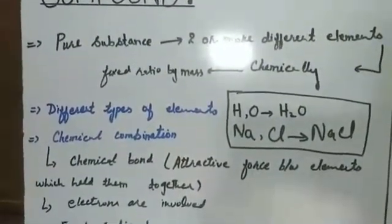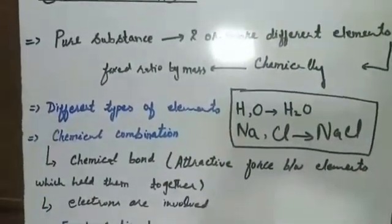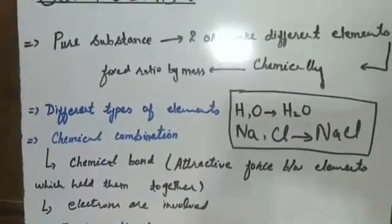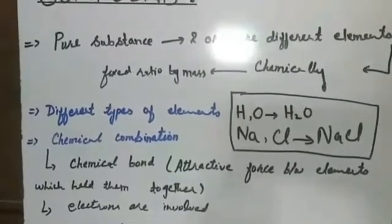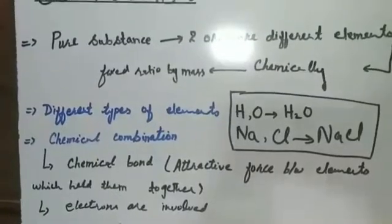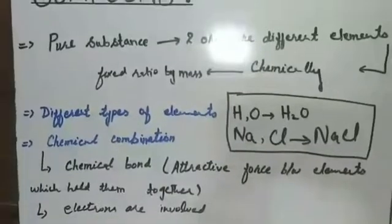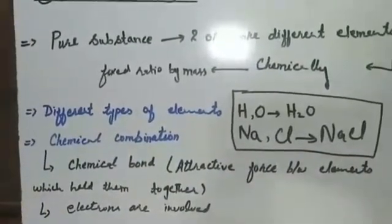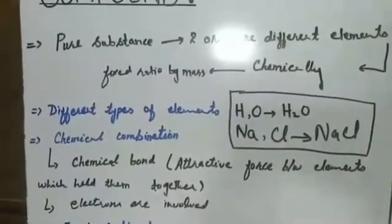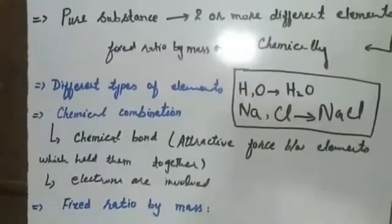The next thing the definition tells us is chemical combination — these different types of elements combine together by means of a chemical combination. This combination is due to certain attractive forces between the elements, called a chemical bond. A chemical bond is the attractive force between elements which holds them together by means of electrons. When electrons are involved, there is a chemical reaction, so hydrogen and oxygen react chemically to form the H2O compound.